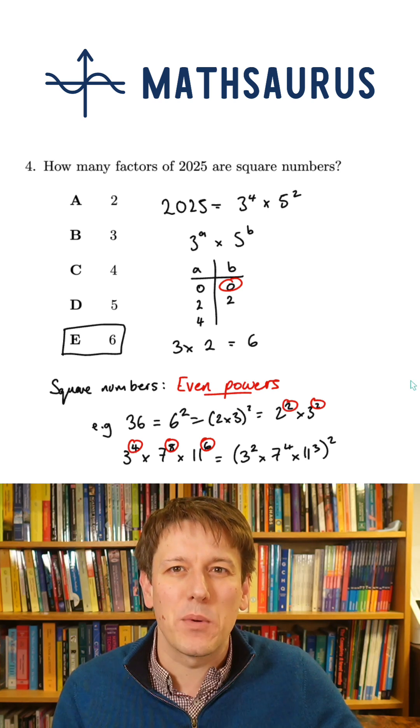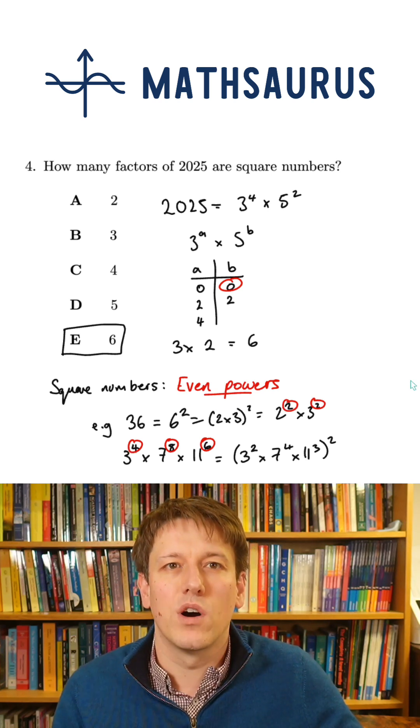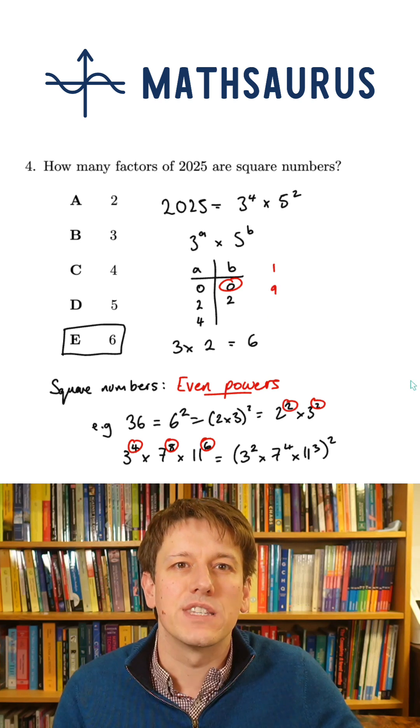The options for b equals 0 would be where we don't have any factors of 5. Since 5 to the 0 is 1, I'd have either 3 to the 0, 2, or 4, giving us 1, 9, or 81.